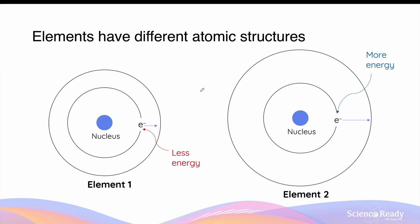Since elements have different atomic structures, orbits have different energy levels amongst different elements. So element 1 and element 2 may both have two energy levels, but element 1's energy levels for the two orbits can be smaller compared to those of element 2. This means the amount of energy absorbed by the electrons during the excitation process would be different between the two elements, and this will be unique to the elements that the electrons are found in. We can use this information — that is, the amount of energy being absorbed — to identify elements.